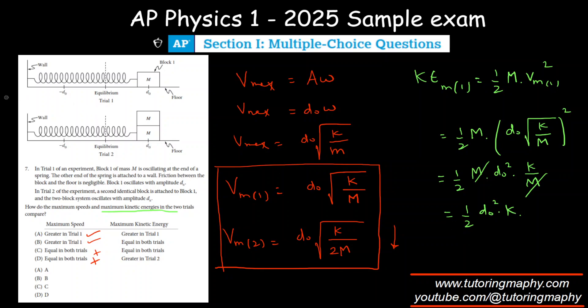What about Trial 2? For Trial 2, I'm going to do the same activity except that the mass will be replaced. KE max 2 will be half—be careful with the mass because it is now 2M—and velocity is D not root K over 2M squared. This will be half of 2M times D not squared times K over 2M.